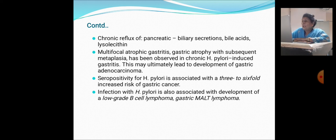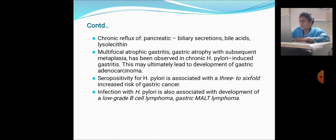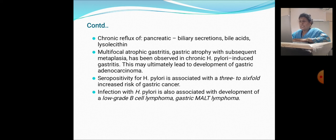Multifocal atrophic gastritis: gastric atrophy and subsequent metaplasia has been observed in chronic H. pylori-induced gastritis, which may ultimately lead to gastric adenocarcinoma. Seropositivity for H. pylori is associated with a 3 to 6-fold increased risk of gastric cancer. Infection with H. pylori is also associated with development of a low-grade B-cell lymphoma, also known as gastric MALT lymphoma.